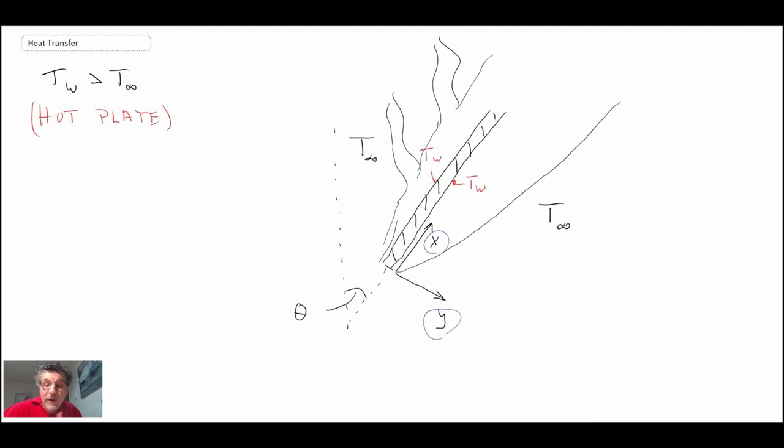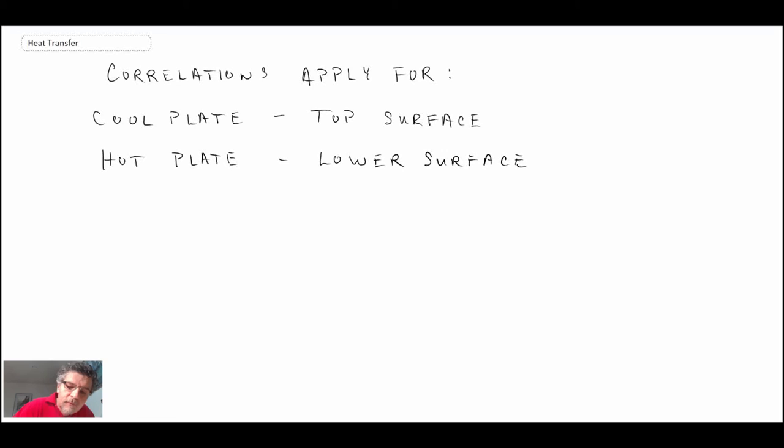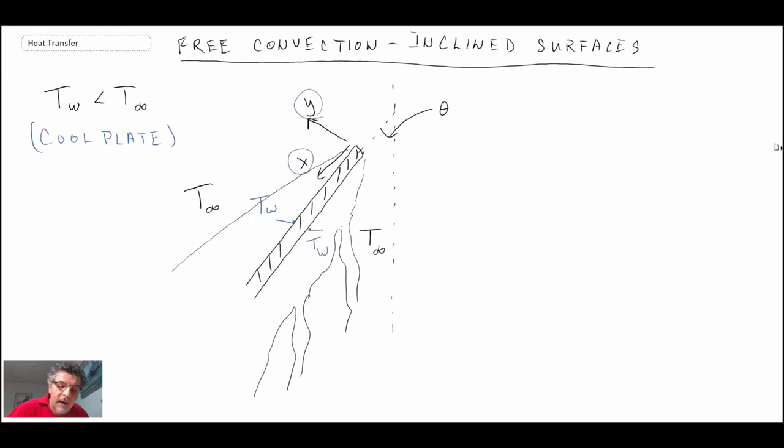For these two different scenarios of an inclined plate, the correlations that we've seen thus far will apply, and this is for the constant temperature plate. For the cool plate, it will work only for the upper surface. So okay, and then down here, not okay, in terms of the correlation.